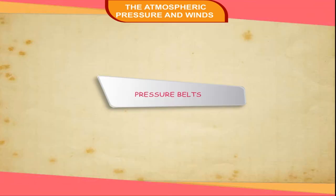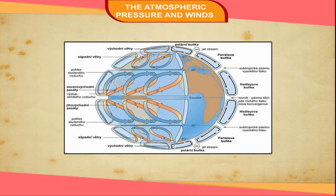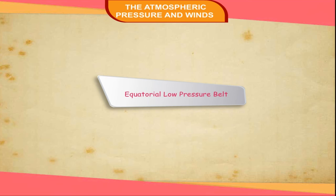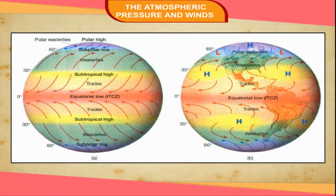Pressure Belts: The variations in pressure show a pattern of major pressure belts. Equatorial Low Pressure Belt: The equatorial area is a region of high temperature. The atmosphere heats up in this region, expands and becomes lighter. Hence, the air starts rising up, creating a low pressure belt in this region. This belt is called the doldrums, or the region of calm conditions. There is a complete absence of surface winds.